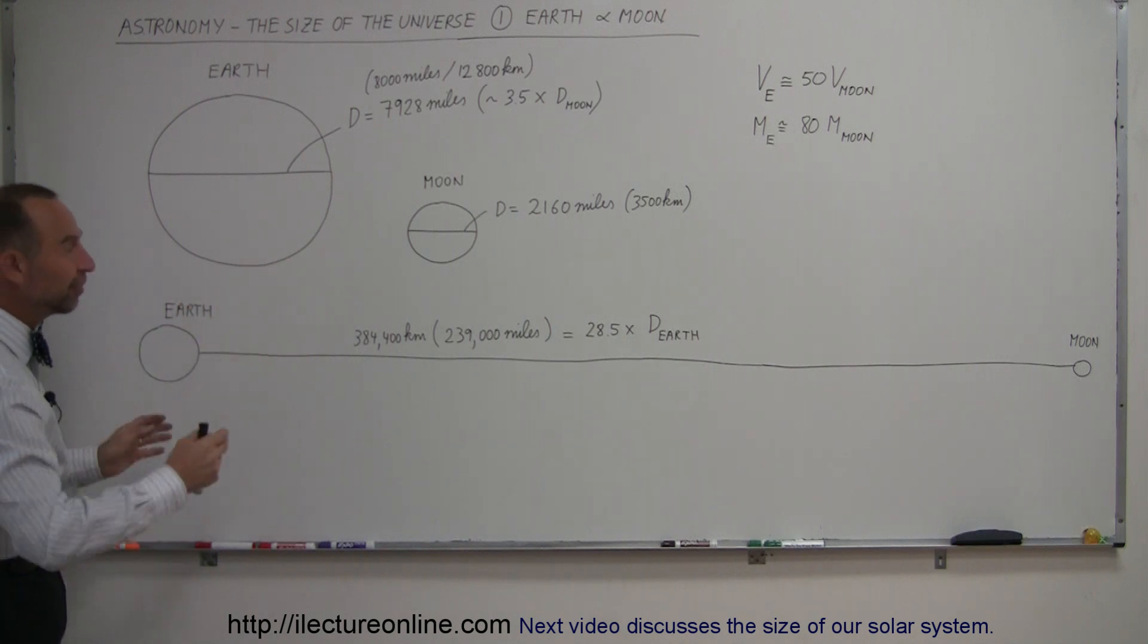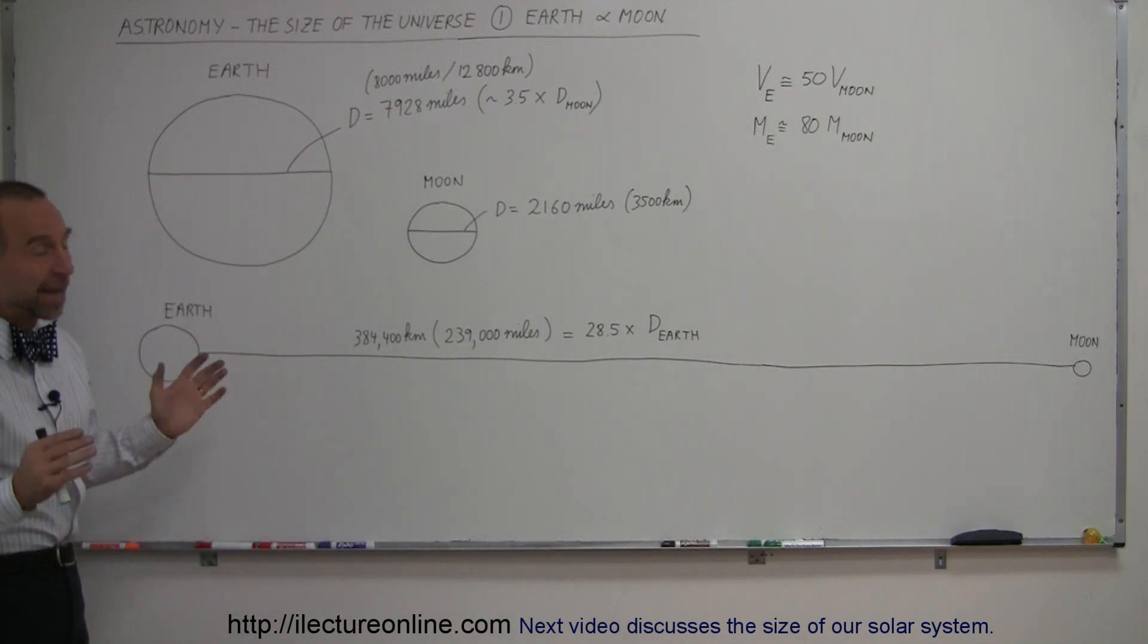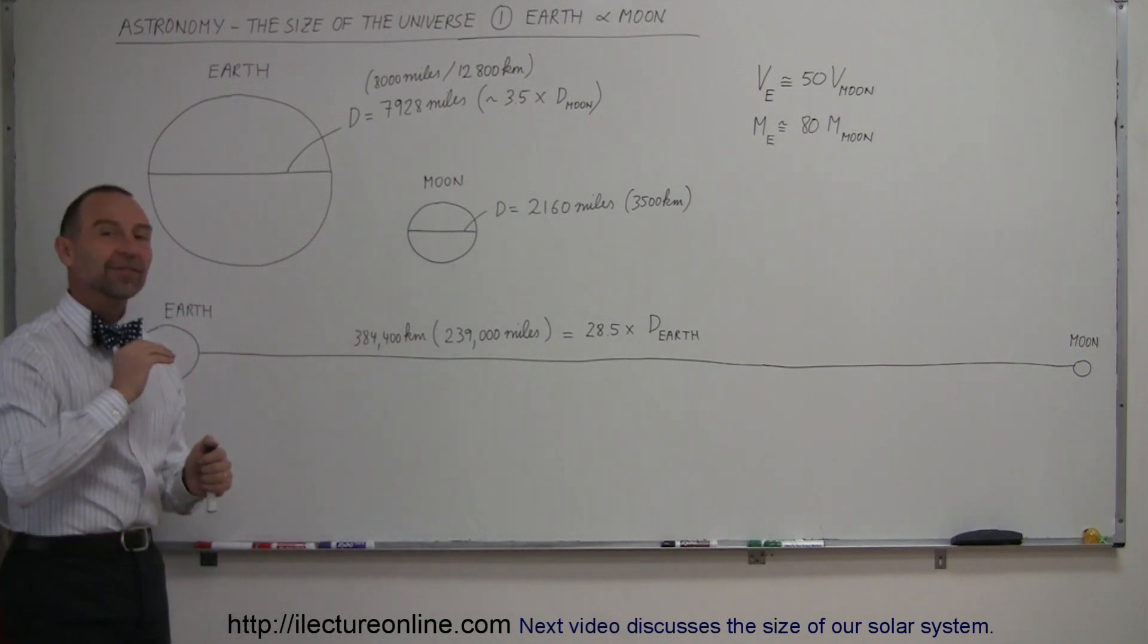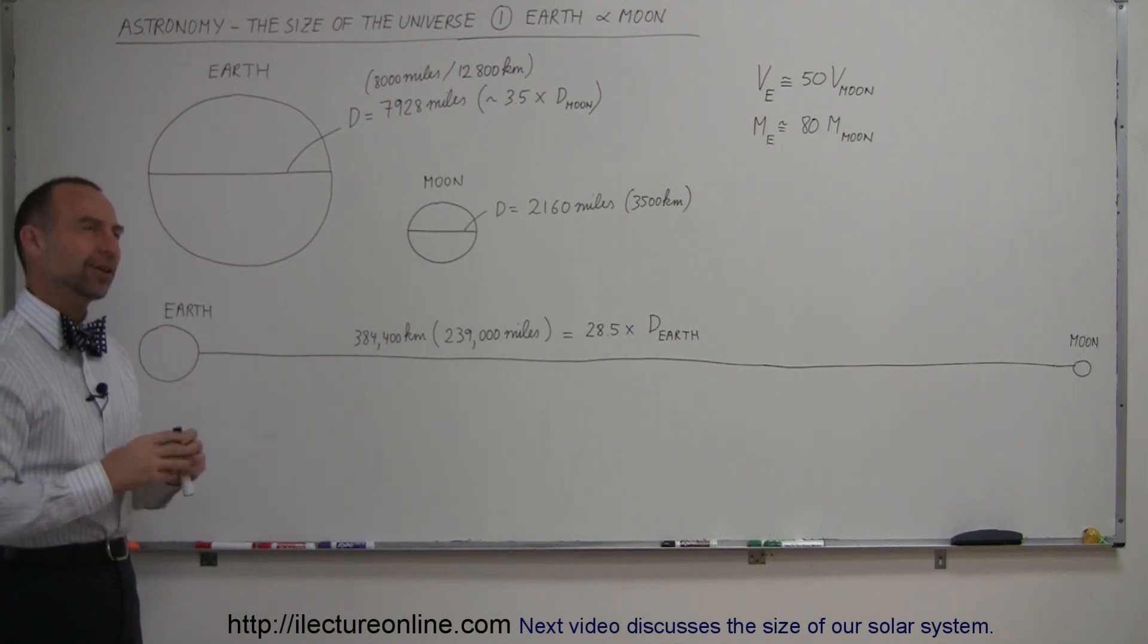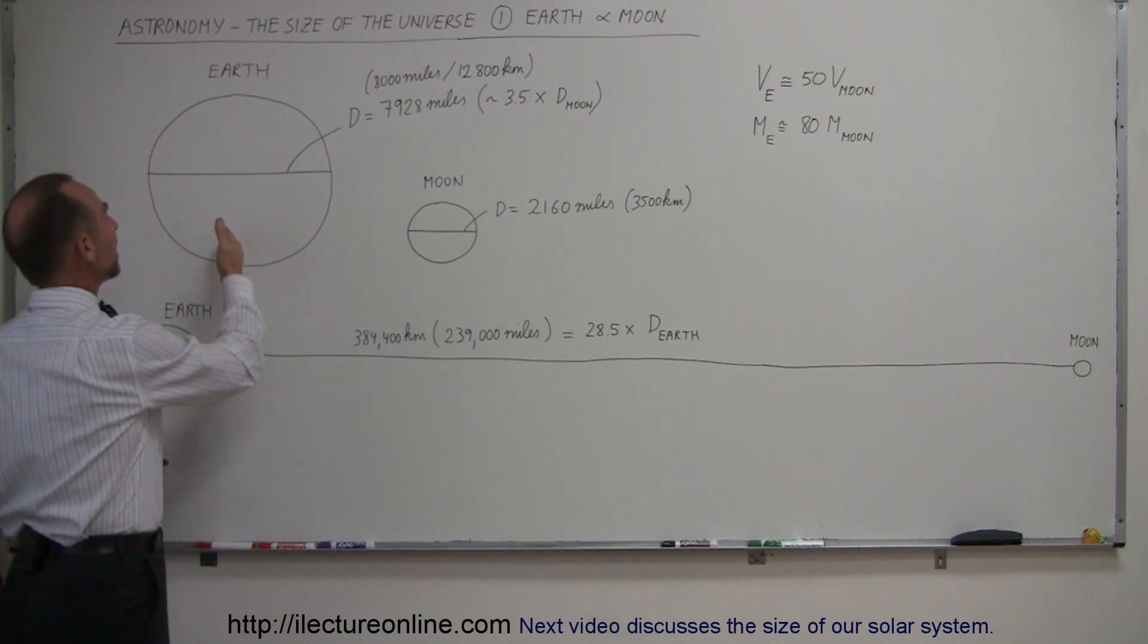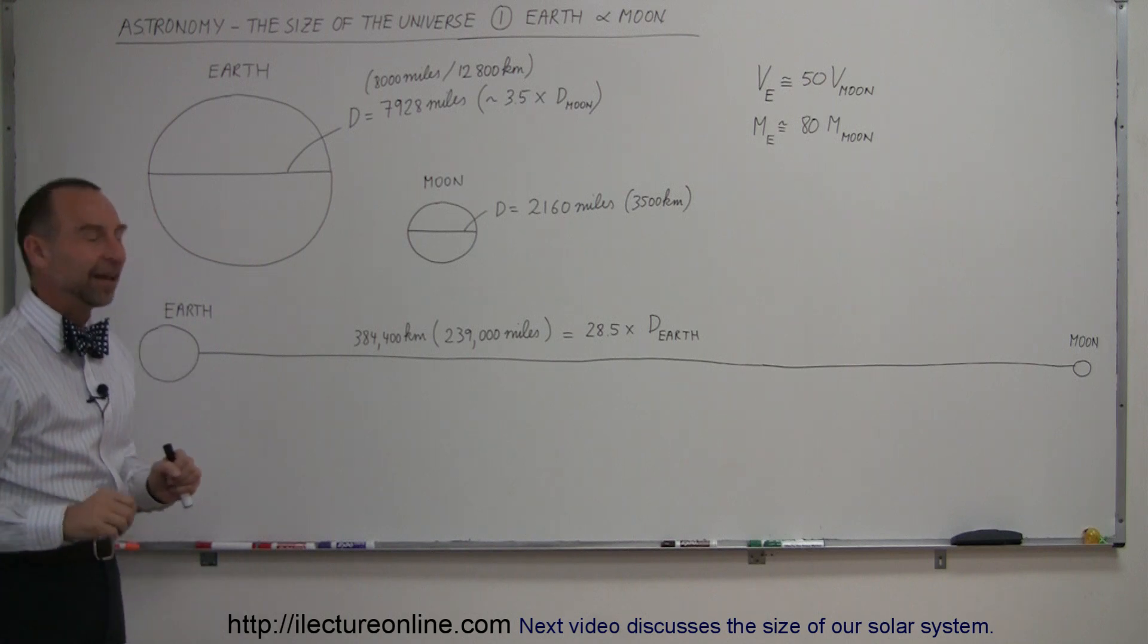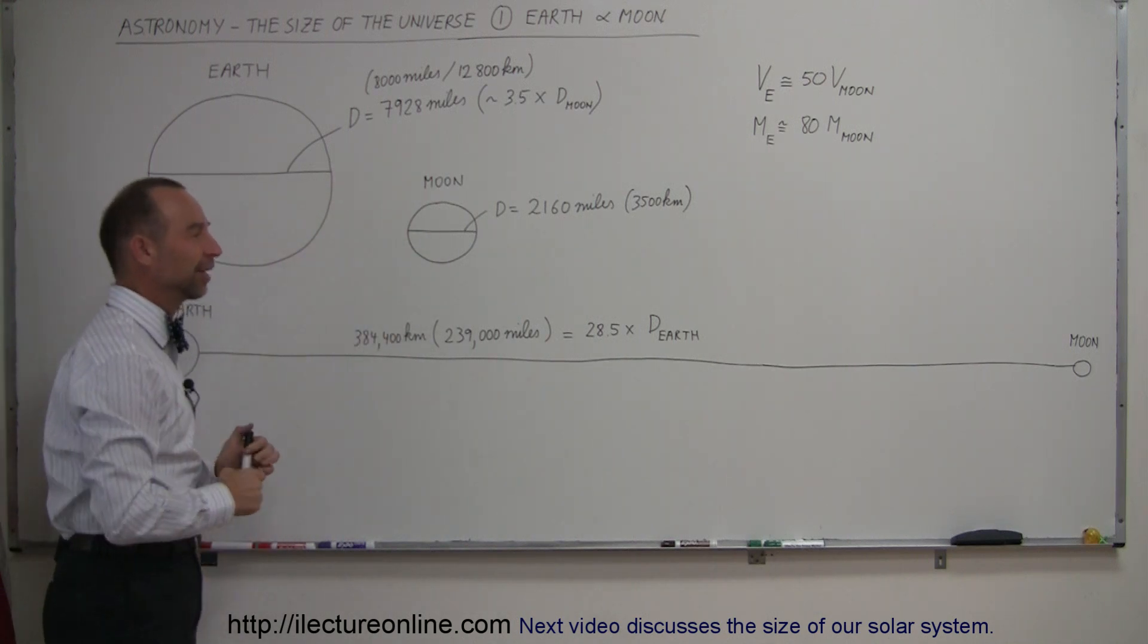So that gives us a feel for the size of our own little universe where we live. Notice that mankind has never made it past the Moon. We've sent satellites further than that, but mankind, man or woman, has never made it past the Moon. That has been our universe where we have lived and spent some time, not a lot of time on the Moon, most of the time over here, that's our home.